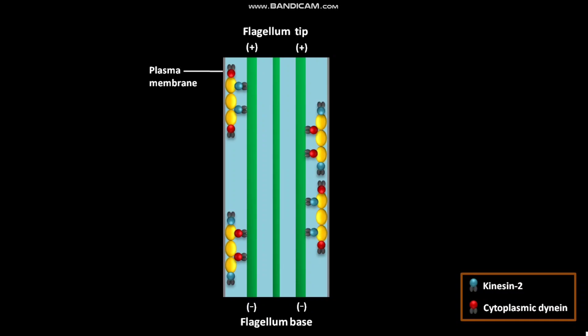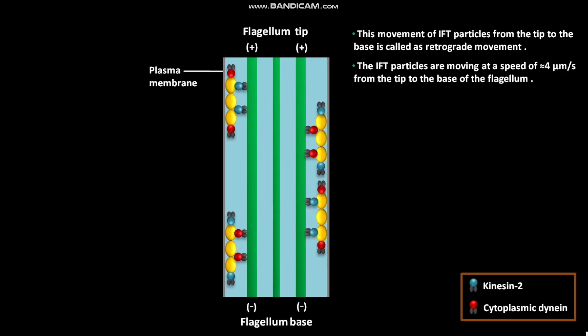Transport of IFT particles towards the base is dependent on cytoplasmic dynein. This movement of IFT particles from the tip to the base is called retrograde movement. The IFT particles are moving at a speed of almost equal to 4 micrometers per second from the tip to the base of the flagellum.